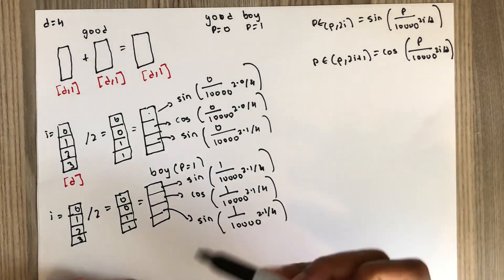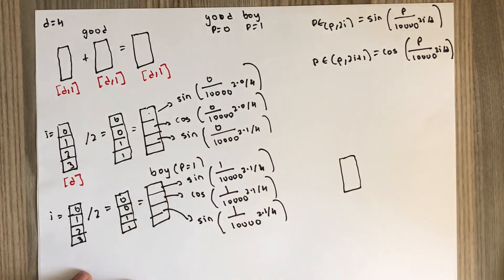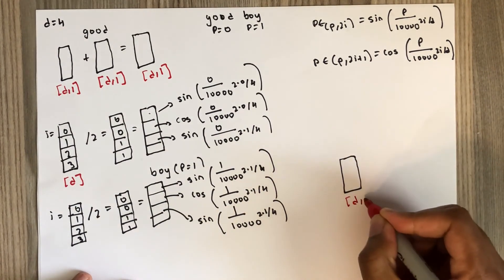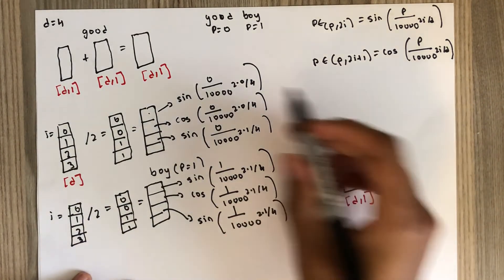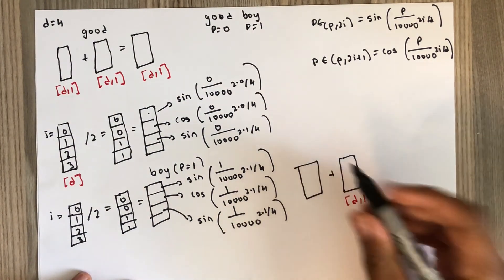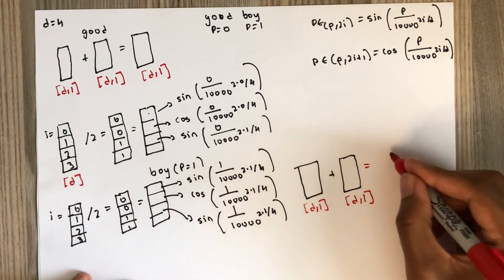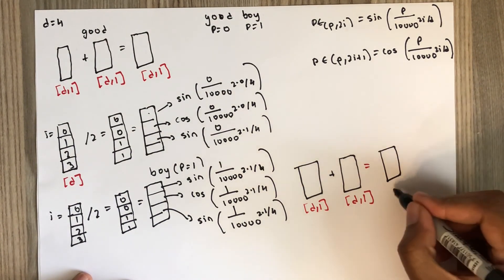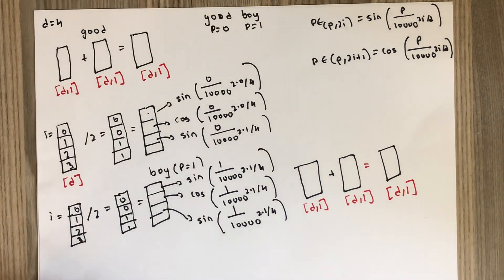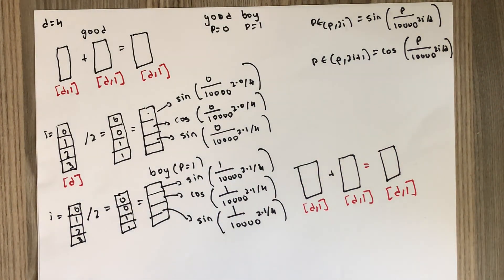Finally, the positional encoding for 'boy' has a dimension of d by 1, and we add it to the embedding of 'boy', which also has a dimension of d by 1. The final tensor for the word 'boy' will also have a dimension of d by 1. We can now use this in further layers. Thank you very much.